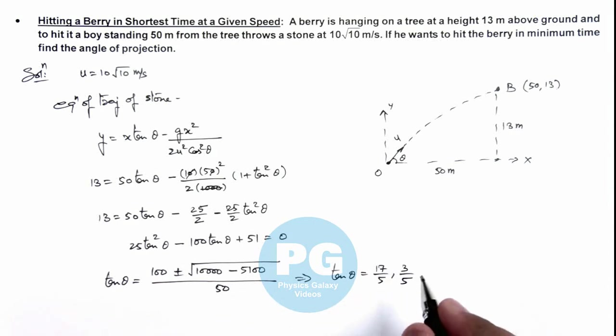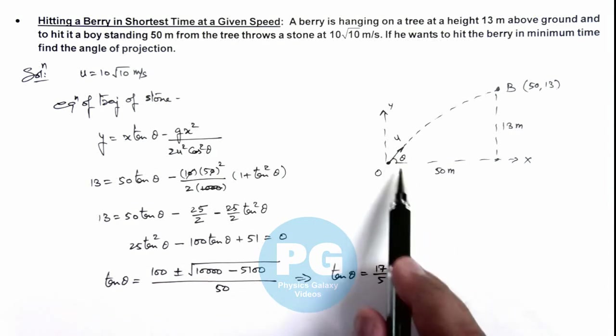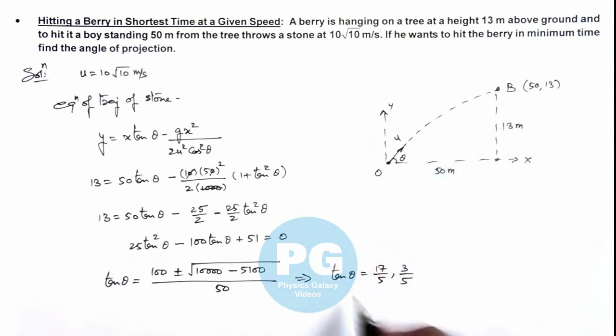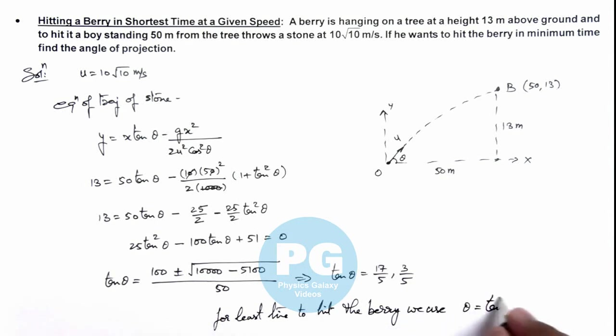So in this situation we are required to find the angle of projection for which the stone will hit the berry in minimum time. That means the angle of projection should be taken the smaller one, so here we can say for least time to hit the berry, we use theta equals tan inverse of 3 by 5. That is the result of this problem.